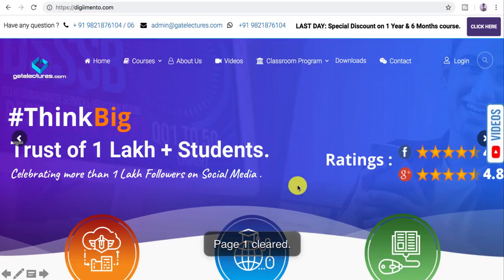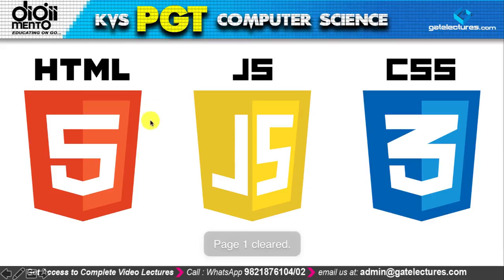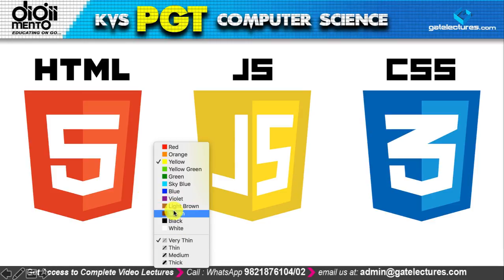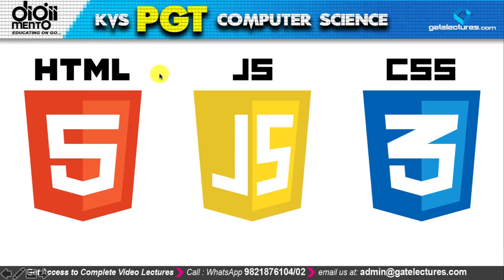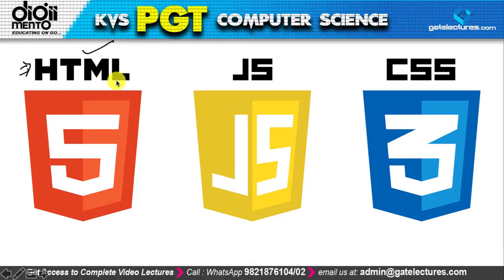Let us start with a basic introduction to JavaScript — what it is and why we need it. In web development, there are three things: HTML (now HTML5), JavaScript (also called JS), and CSS — Cascading Style Sheet.